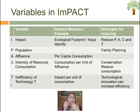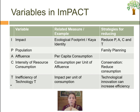A stands for affluence — how affluent the population is, meaning what is the consumption per capita. The Kaya identity introduces the GDP turnover to measure this. The book doesn't really give a strategy for reducing affluence; we will discuss this later.